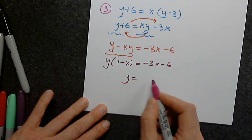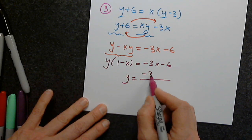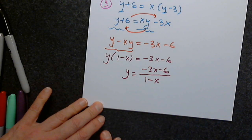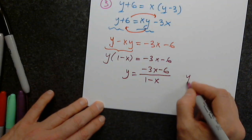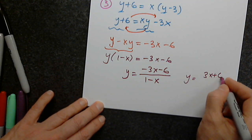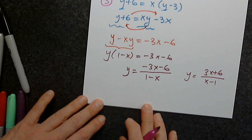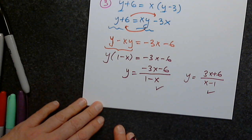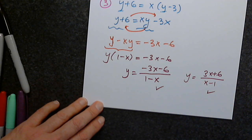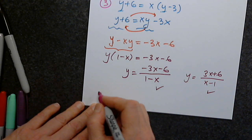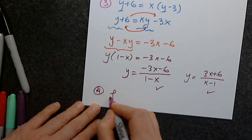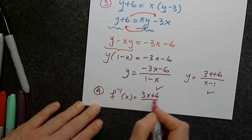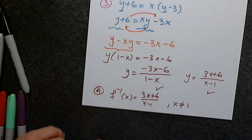The final step: too many negatives, so I will multiply the top and bottom by negative 1 to get (3x + 6) / (x - 1). You don't have to — this form is also correct — but I just don't like negative leading coefficients. So in step 4, f inverse = (3x + 6) / (x - 1), and of course x cannot equal 1.